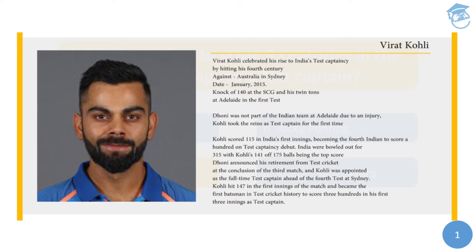Dhoni returned to the team as captain for the second and third matches at Brisbane and Melbourne respectively. Dhoni announced his retirement from test cricket at the conclusion of the third match, and Kohli was appointed full-time test captain ahead of the fourth test at Sydney. Captaining the test team for the second time, Kohli hit 147 in the first innings and became the first batsman in test cricket history to score three hundreds in his first three innings as captain.